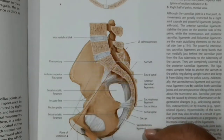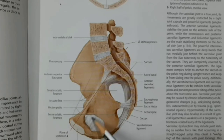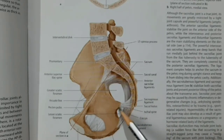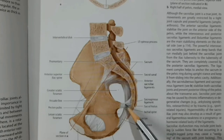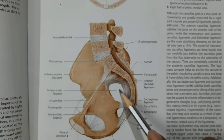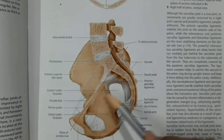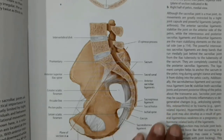The lateral wall of the pelvic cavity shows the body of the pubic bone, the obturator foramen filled with the obturator membrane, the ischium bone, the ilium bone above, the ischial spine, greater and lesser sciatic notches, the sacrotuberous ligament to the ischial tuberosity, and the sacrospinous ligament. These form the greater and lesser sciatic foramina — all constituting the lateral wall of the pelvis.